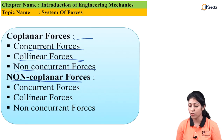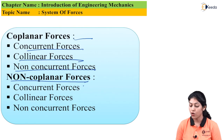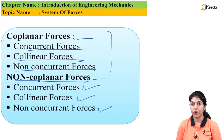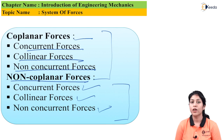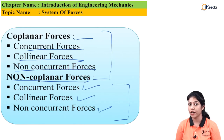The third type of force is non-coplanar forces. Non-coplanar forces are also categorized into three types: non-coplanar concurrent forces, non-coplanar collinear forces, and non-concurrent non-coplanar forces. So these are the types of coplanar and non-coplanar forces. Now let's start the discussion of these three types — coplanar, non-coplanar and collinear forces.